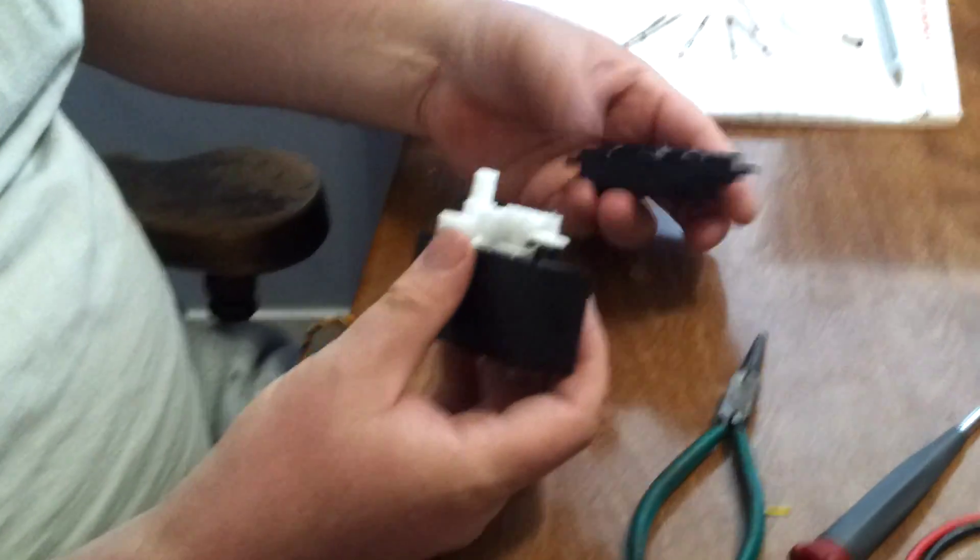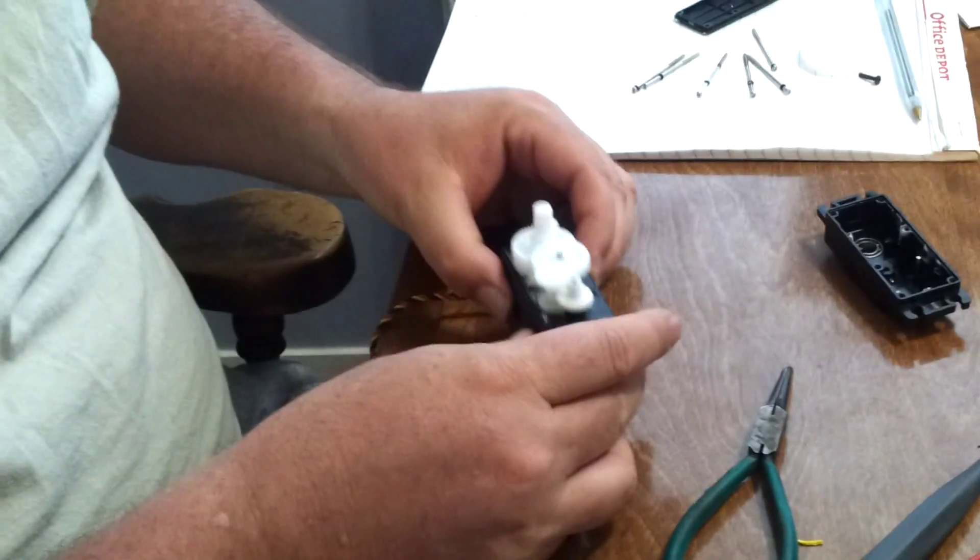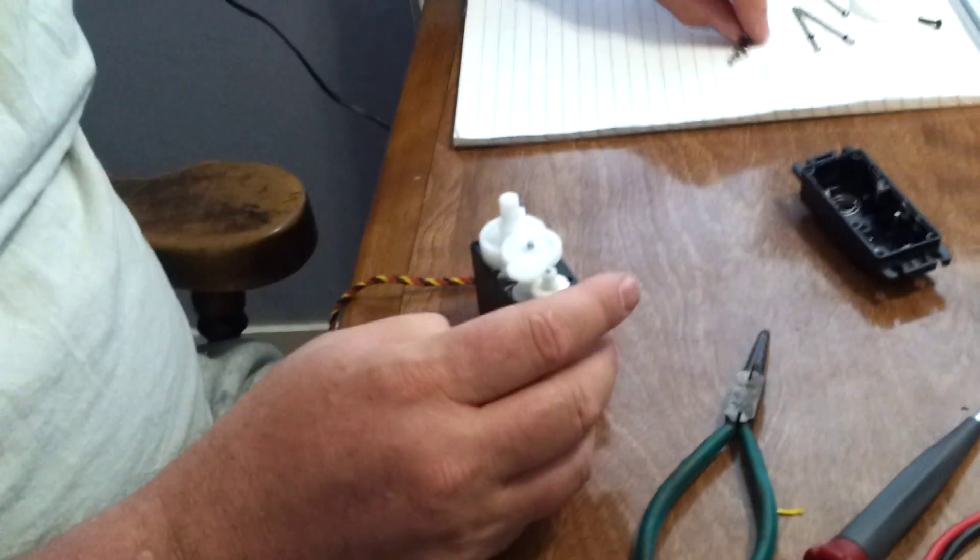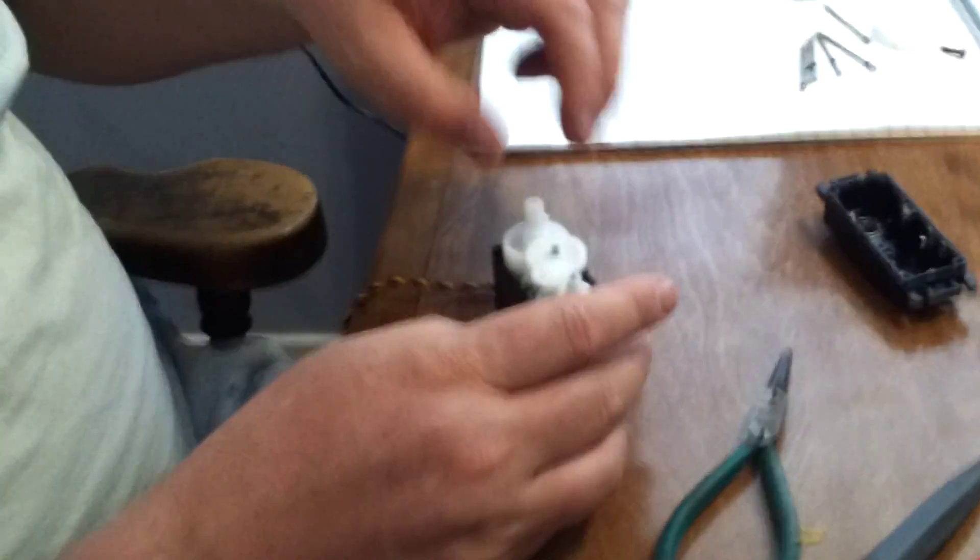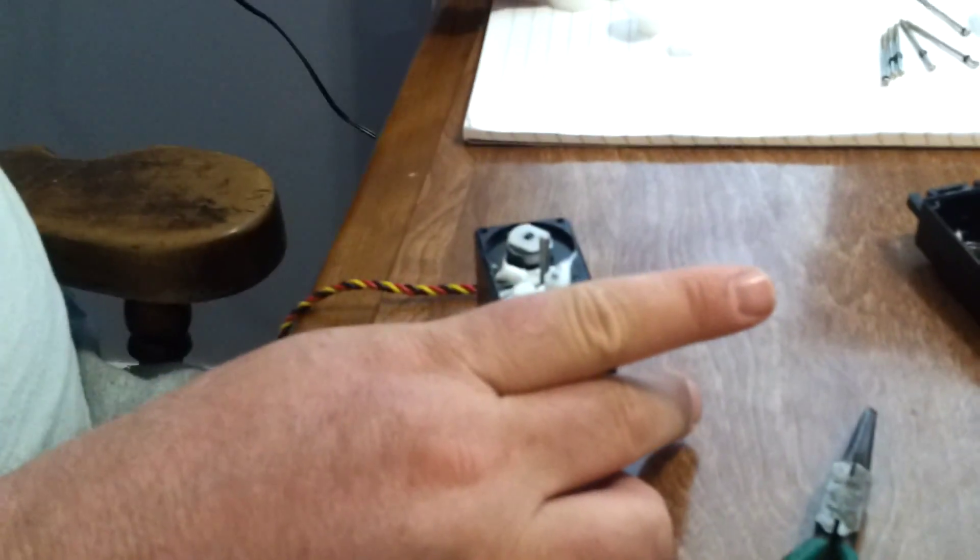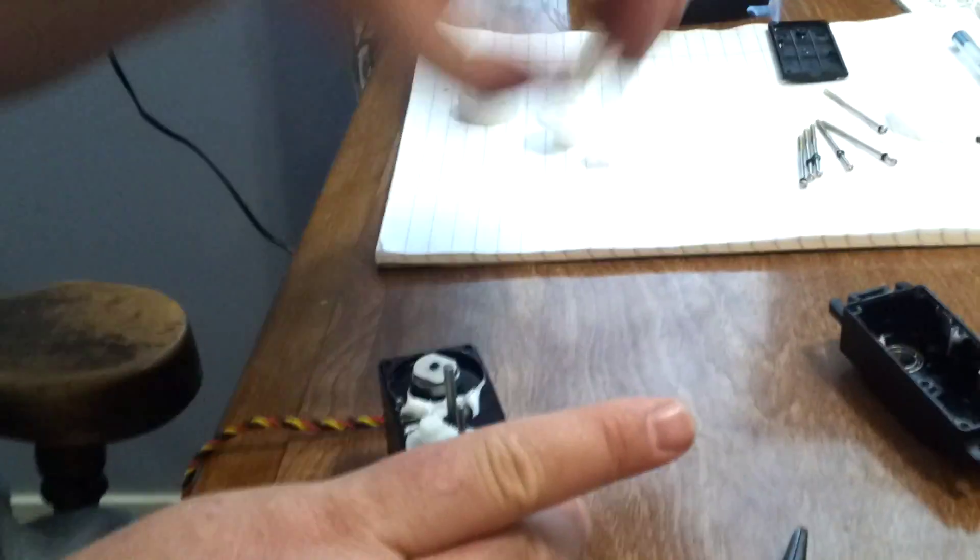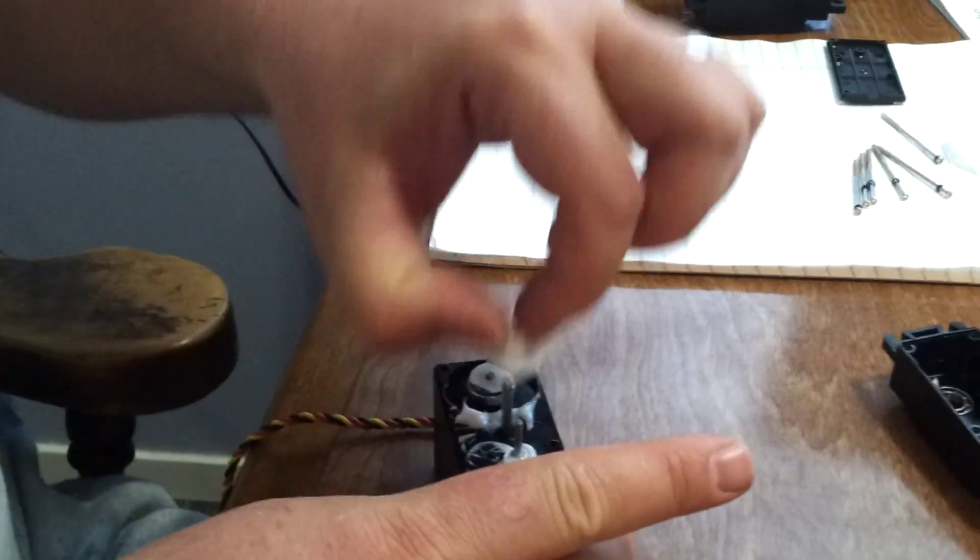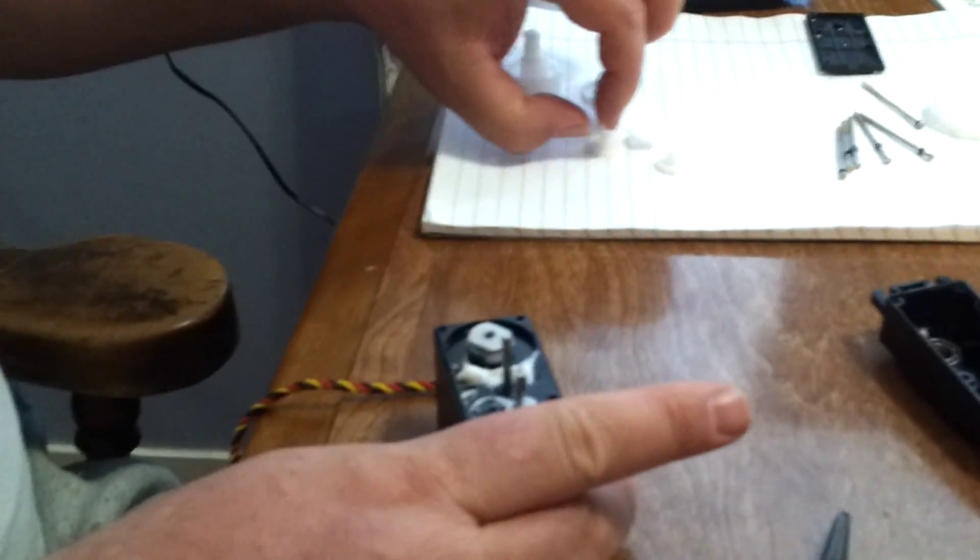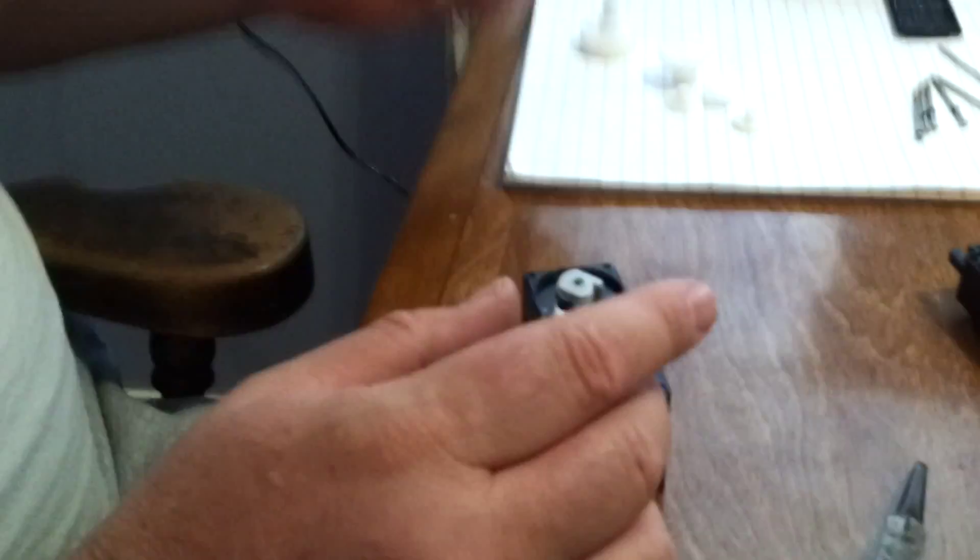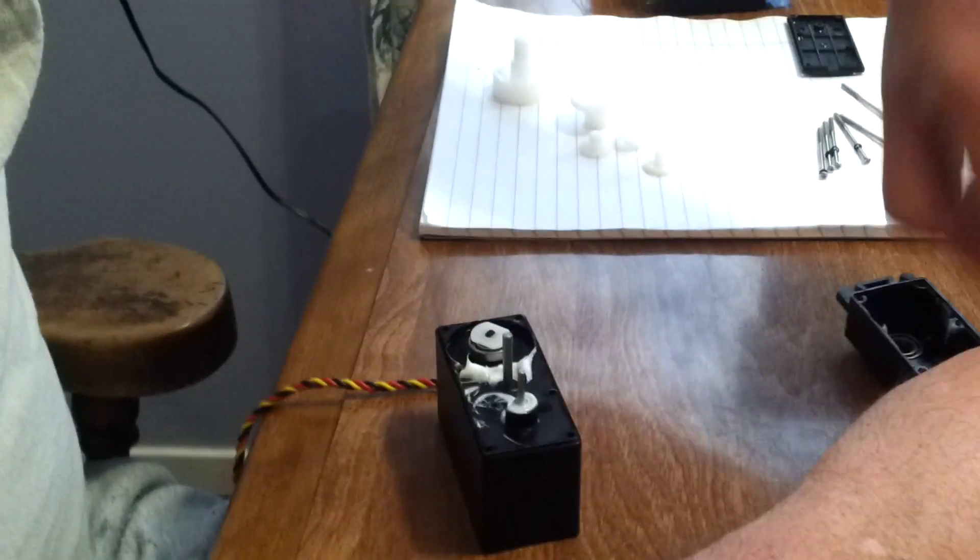Open it up very carefully. Get you a piece of paper so that you can situate your gears, and you want to remember which way you've got them because they have to go in the same order. You'll have two gears that are sitting on top of each other. You want to remember which one goes up and which one goes down.